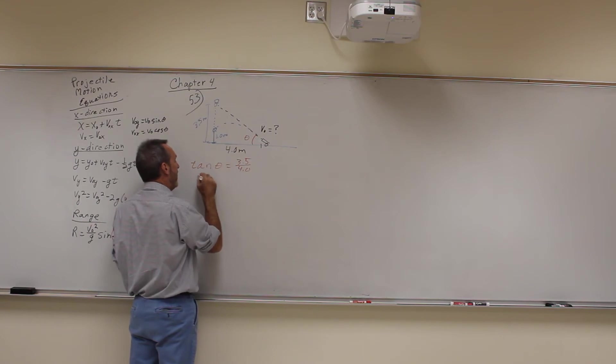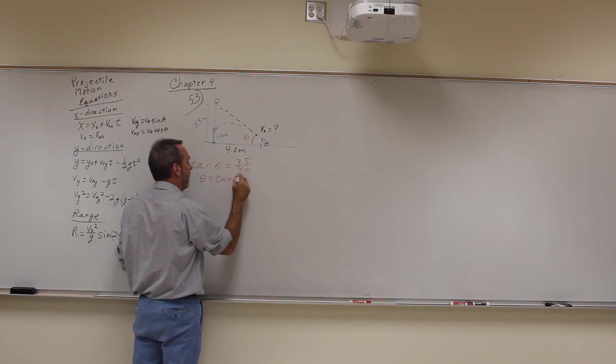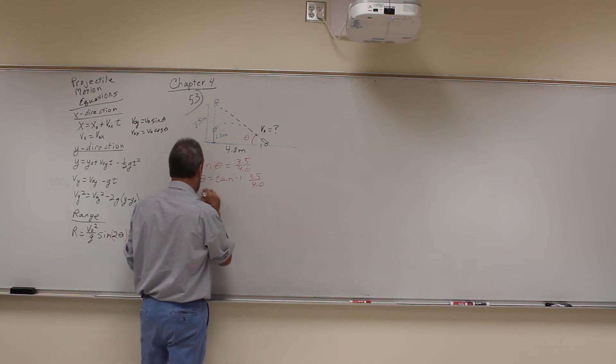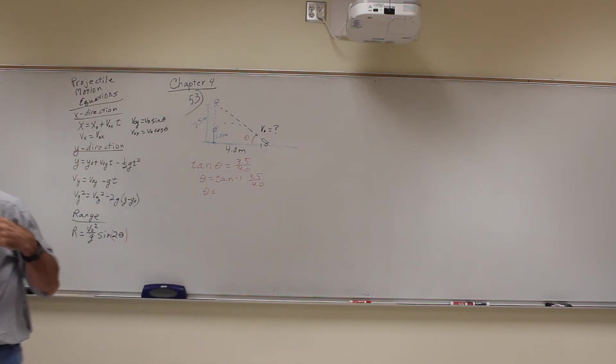So the tangent of theta is going to be equal to 3.5 over 4, the opposite side over the adjacent. Or theta is going to be equal to the inverse tangent of 3.5 over 4. And when you do that, you get the angle as equal to 41.18 degrees.